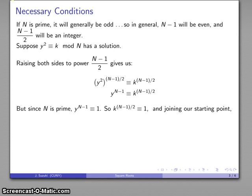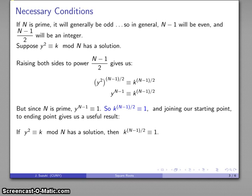Joining our starting point, y squared congruent to k has a solution, to our ending point, k to power n minus 1 over 2 is congruent to 1, gives us a useful result. If y squared equals k mod n has a solution, then k to power n minus 1 over 2 is congruent to 1.